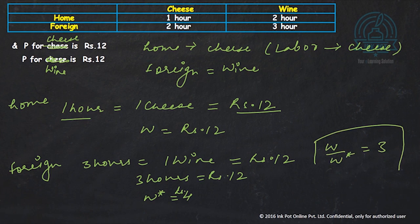And if you relate to it, this is nothing but this difference. So 3 upon 1 is again 3. So relative wage is actually dependent upon this thing. But relative wage is also dependent upon this price. So let's take another example.